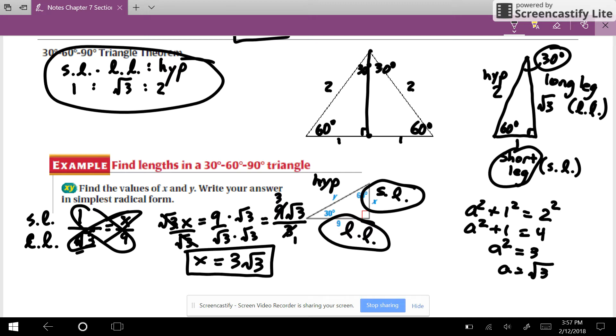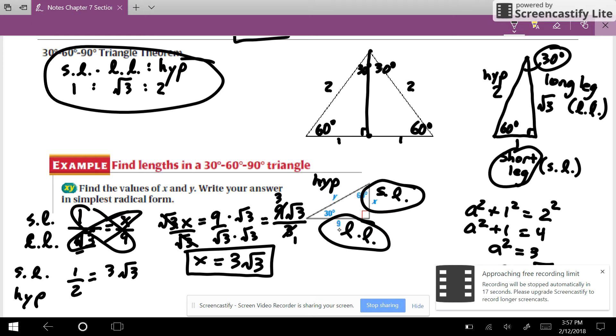So I still have to find y, but that's my x. So now for the hypotenuse, I'll do a short leg to hypotenuse ratio, that's a 1 to 2 ratio. Here it equals, I just found the short leg, 3 square root of 3, over my hypotenuse, which is y. Cross products, y is equal to 2 times 3 square root of 3, which is going to be 6 square root of 3. So you can use those ratios to find all of those sides of a 30-60-90 also.